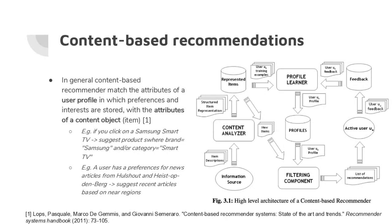For example, you click on a Samsung smart TV and get suggestions where the brand is Samsung or the category is smart TV. Another example: for news recommendations, a user who clicked many articles about Hulshout and Heist-op-den-Berg can be suggested recent articles from nearby regions — a content-based approach using geographic metadata.